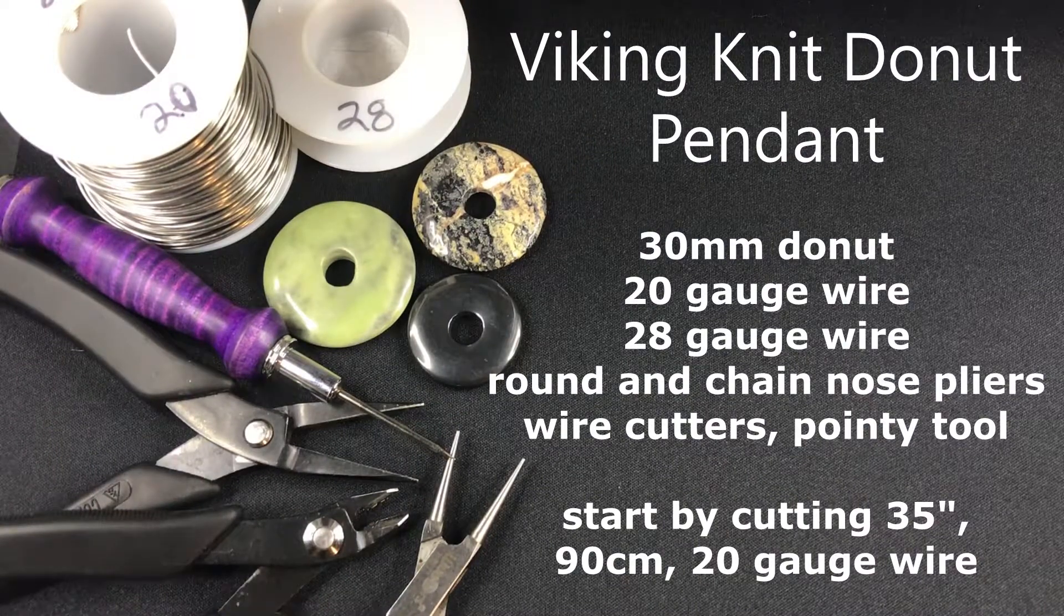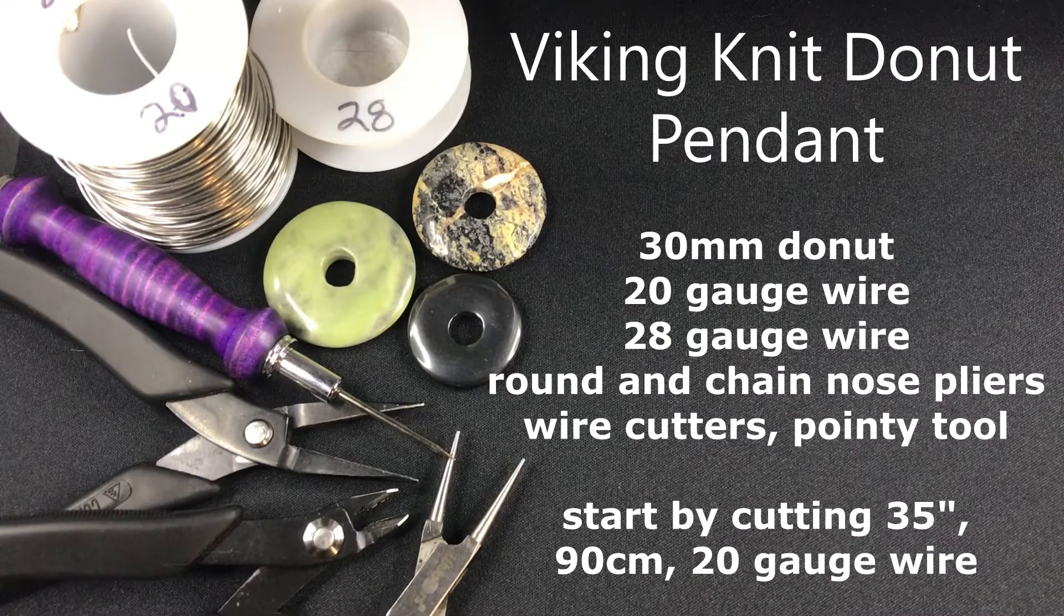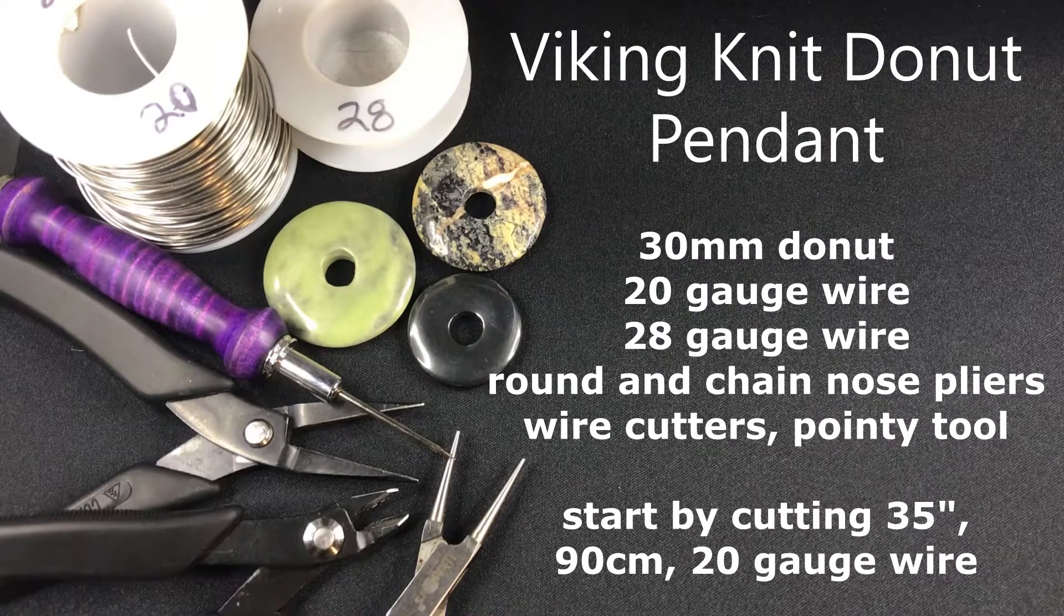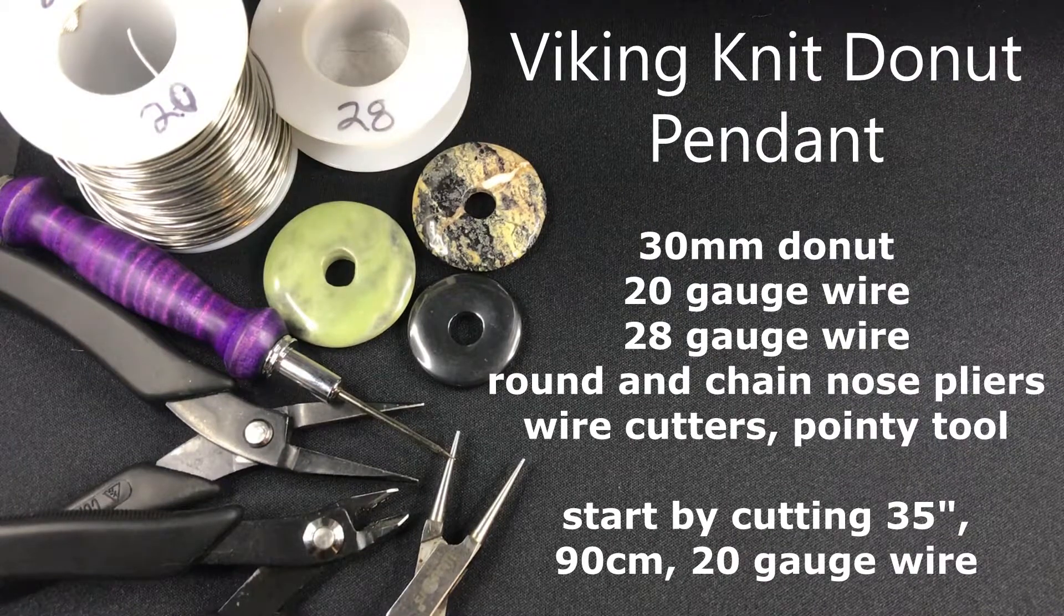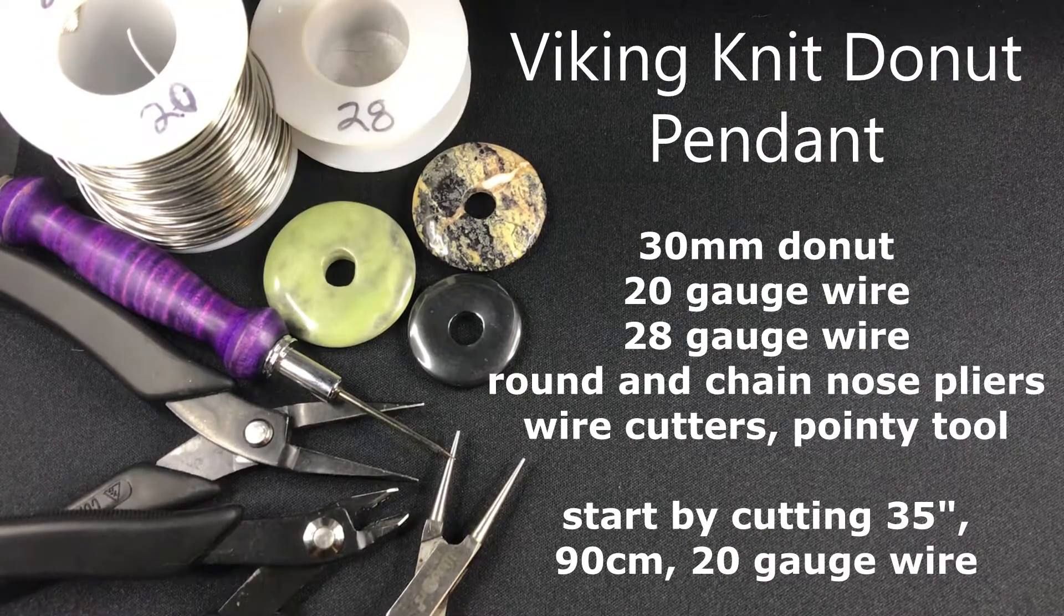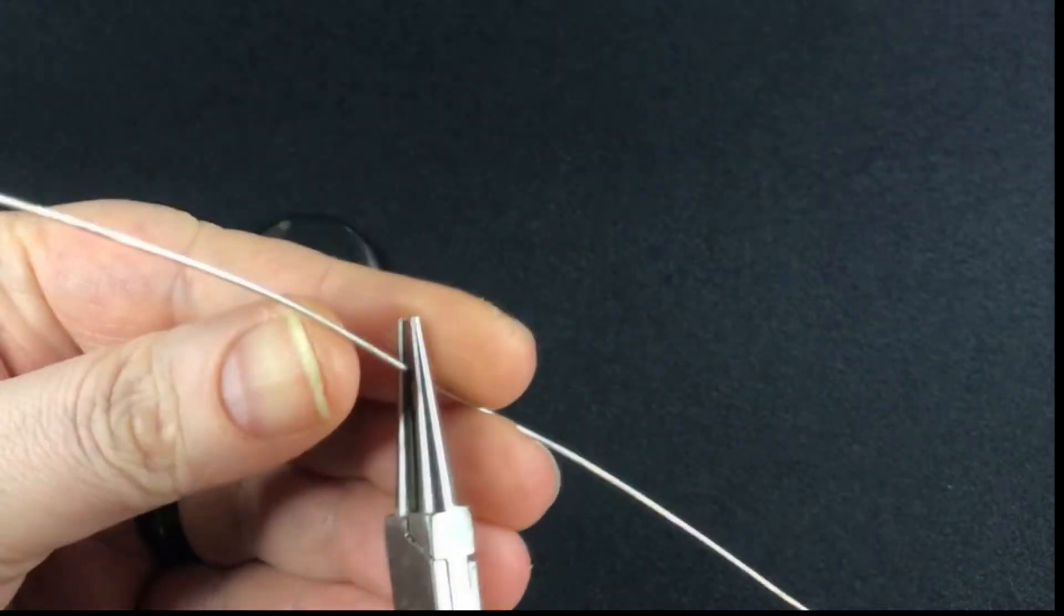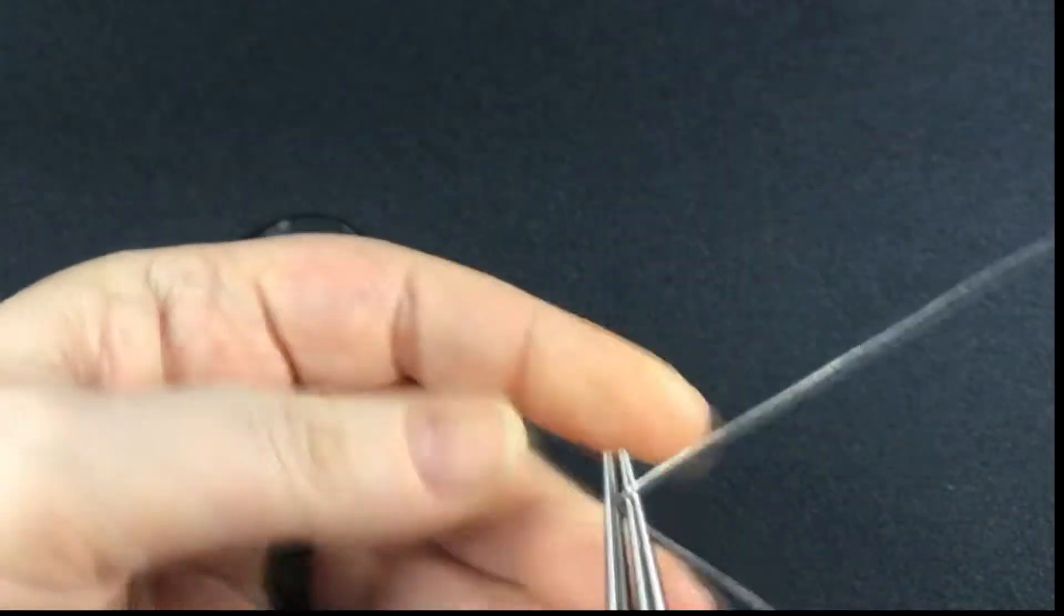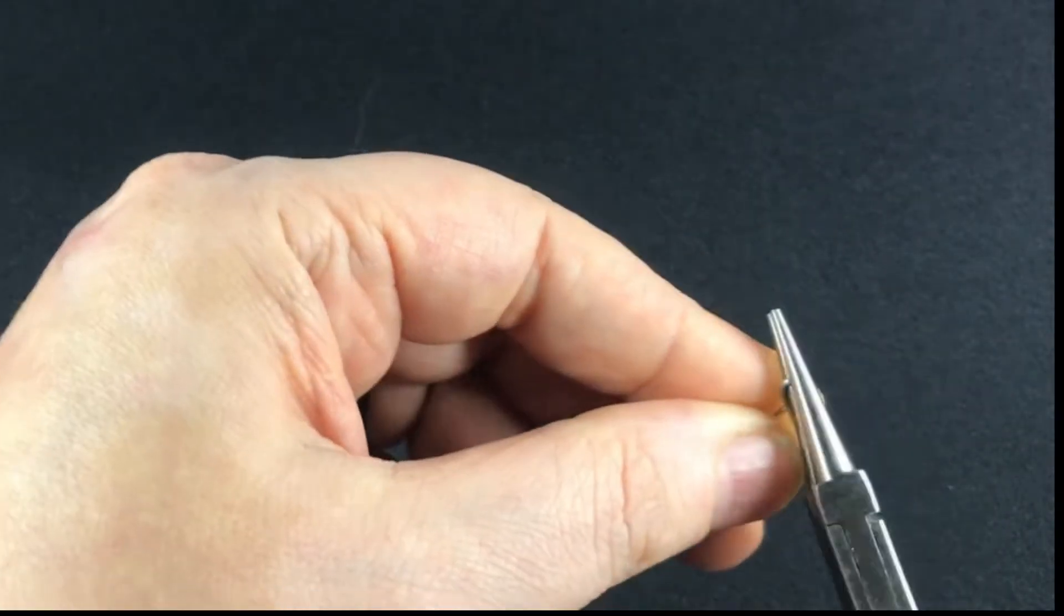Good evening, kind gentle people. In this episode we're going to take the same idea for the fat donut Viking knit cage, but we're going to move the Viking knit to the edge, inside edge, well front edge of the donut, giving us a delicate little wire chain that goes along the front edge of the donut.